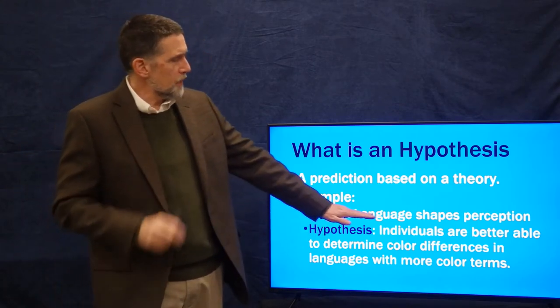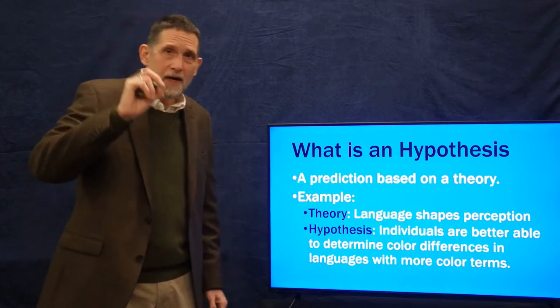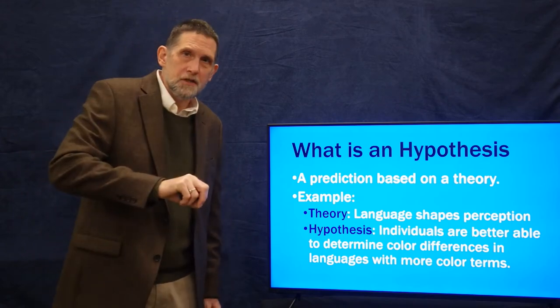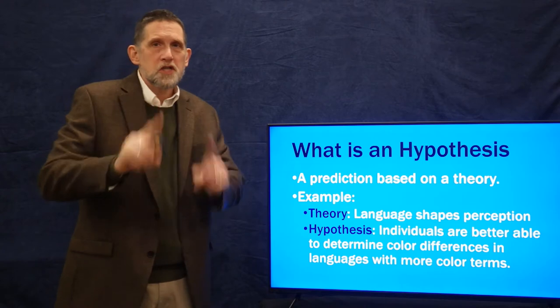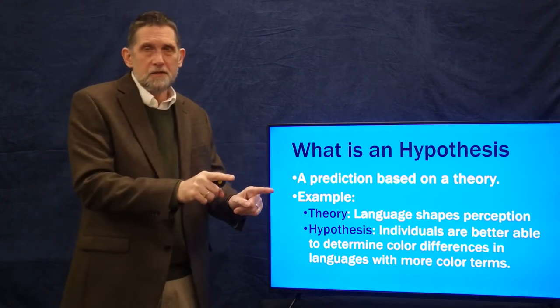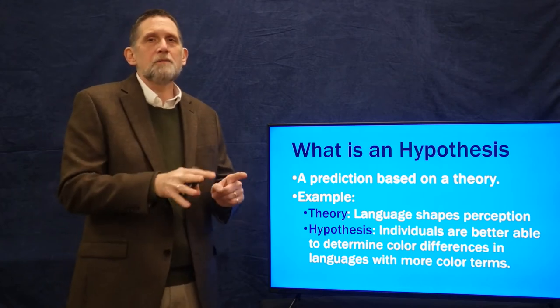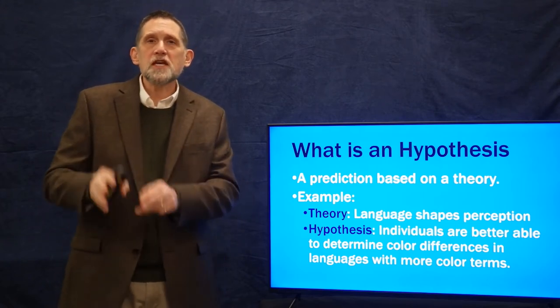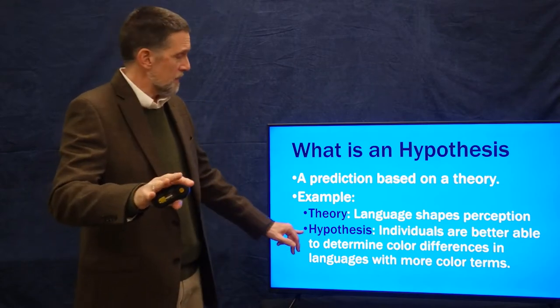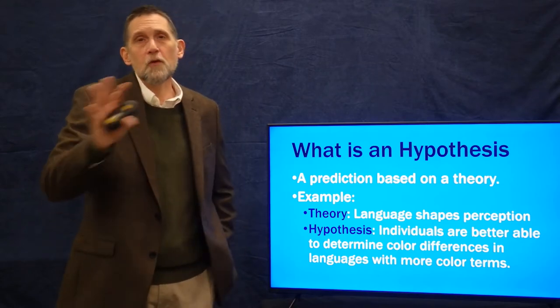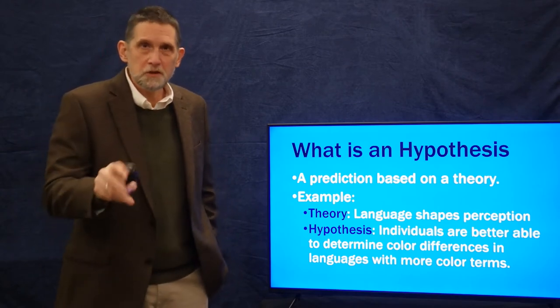That flows right out of the theory. What you can see is that the hypothesis is a prediction based on that theory. If language shapes perception, then languages with more color terms should provide the opportunity for people to see more differences in color. And actually, that hypothesis has been tested in a variety of ways and seems to have some support to it, which is very interesting.